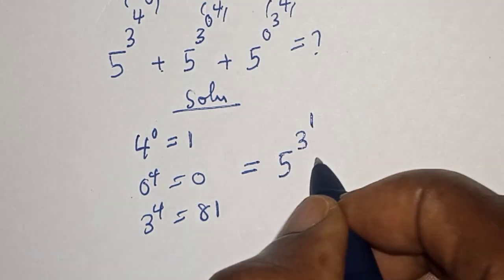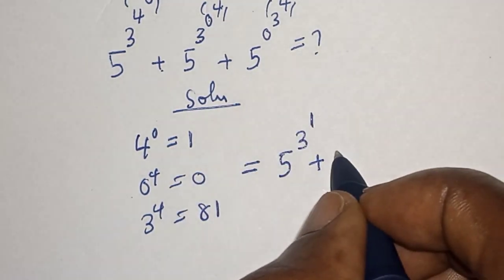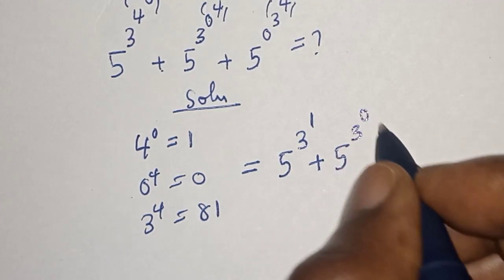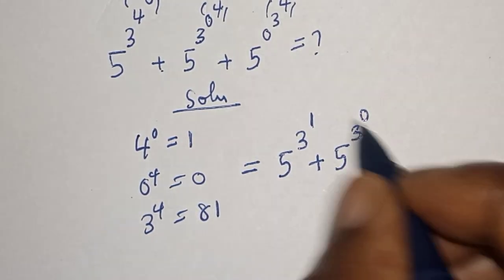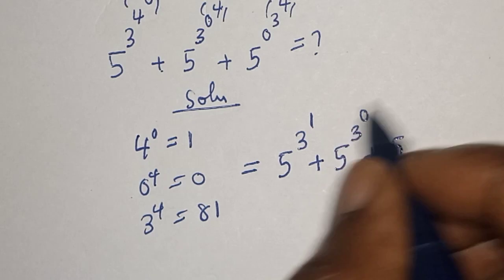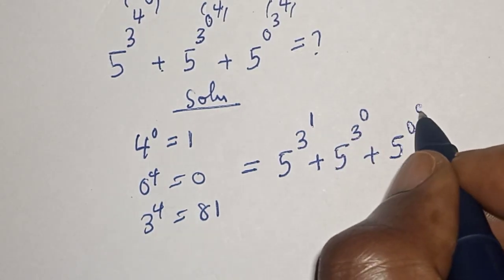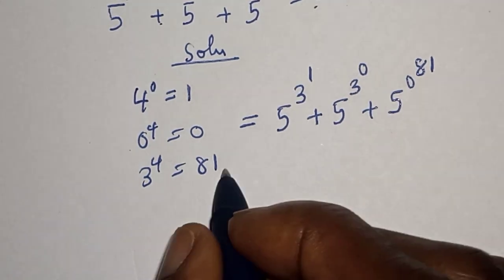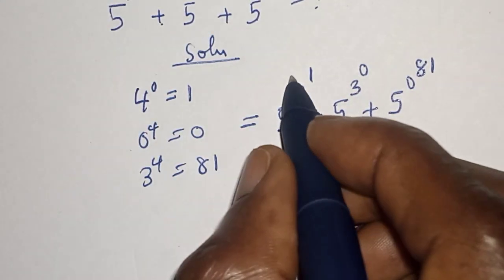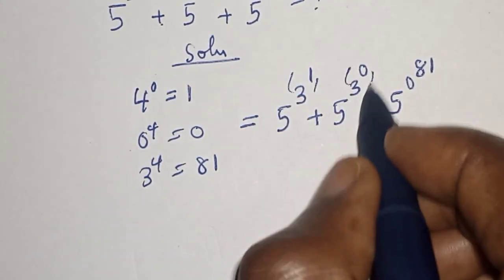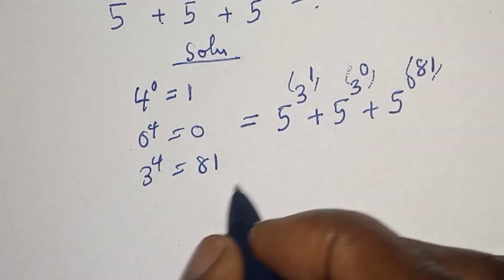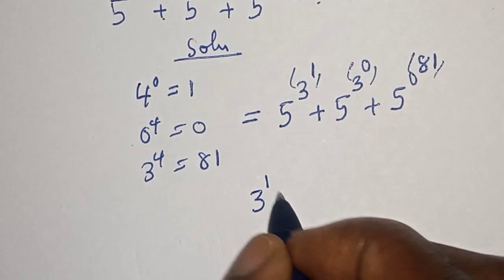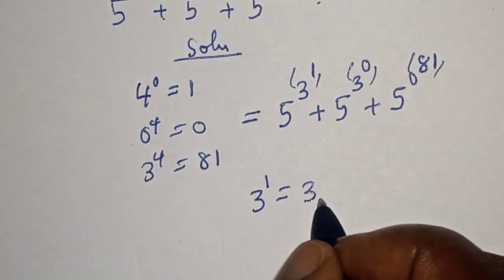This gives us: five raised to power three raised to power one, plus five raised to power three raised to power zero, plus five raised to power zero raised to power 81. Now let's work with these two exponents.